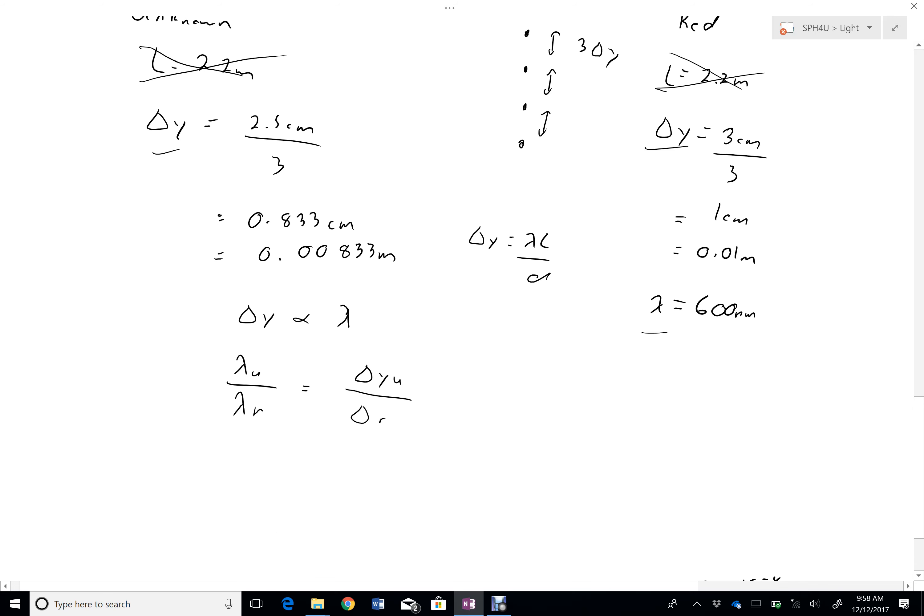So, with that in hand, lambda of the unknown divided by 600 nanometers is equal to 0.833, actually 0.00833, although I guess I could just leave them both in centimeters, whatever, divided by 0.01.